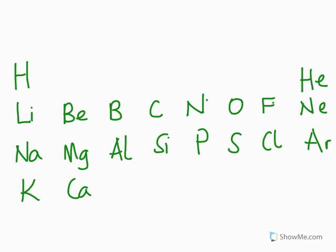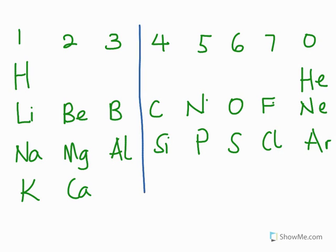At a quick look on this, if we divide this, of course this is our group one, two, three, four, five, six, seven, zero. Later on we can talk about those. Now quick look on this, this is our metals from here to here.